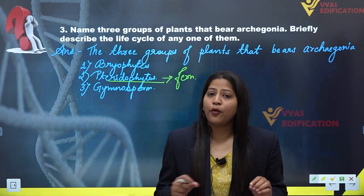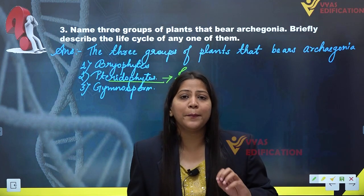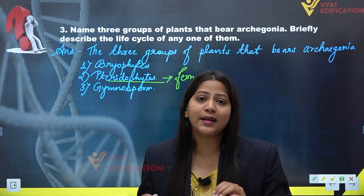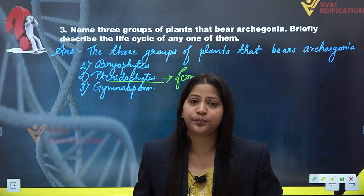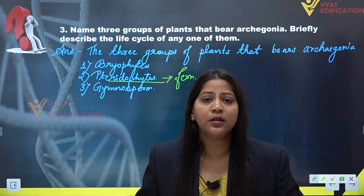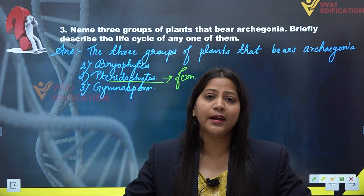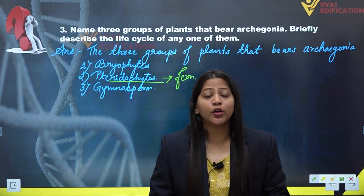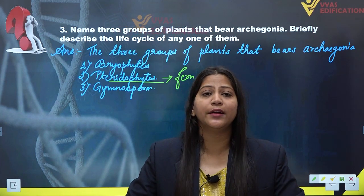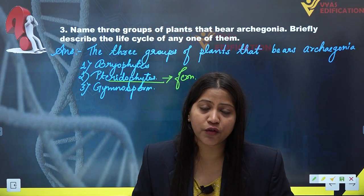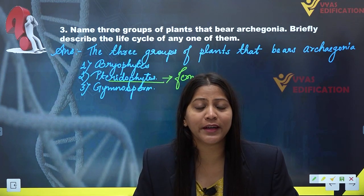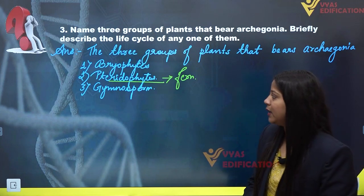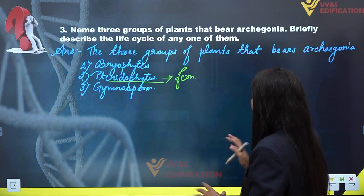With the help of water, the antherozoids or male gametes reach the archegonium and fertilize the egg present inside it. After fertilization, the zygote develops inside the archegonium. This zygote then undergoes mitotic divisions to form a new sporophytic plant body, completing the life cycle of a fern or pteridophyte.